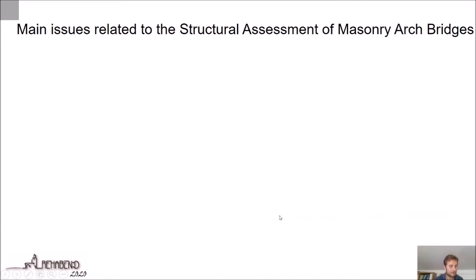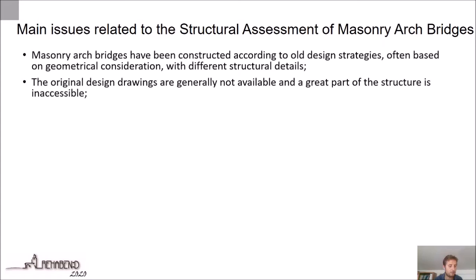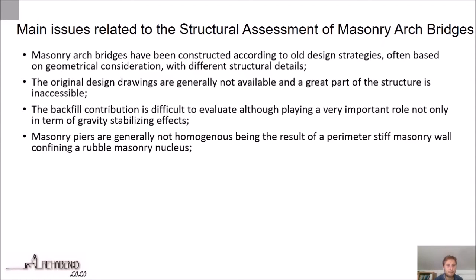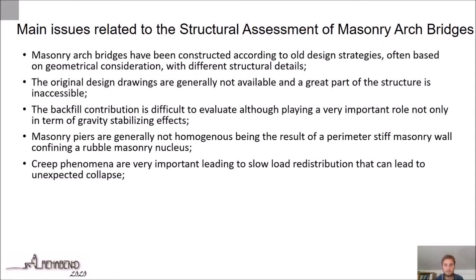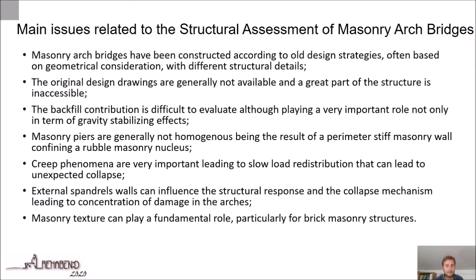This situation led the public opinion and public organizations to check the structural safety of existing bridges. The modeling of historical bridge structures has to take into account several issues: masonry arch bridges were constructed according to old design strategies, original design drawings are not available, several parts are not accessible, and the backfill contribution is not easy to evaluate. Masonry piers are generally not homogeneous, being the result of a perimeter stiff masonry wall confining a rubble masonry nucleus. Creep phenomena are very important because they lead to a redistribution and an expected collapse. External spandrel walls can influence the structural response and masonry texture can play a fundamental role. Another problem is the scour action at the foundation of piles and abutments.